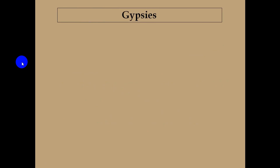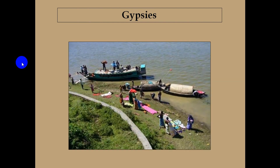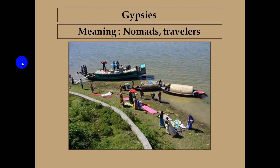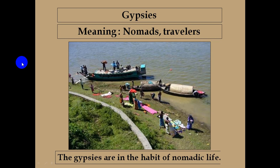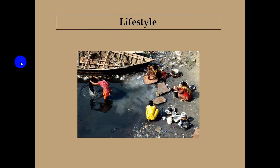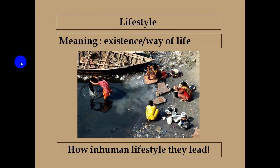Open your book and find out some unknown vocabulary and try to guess their meaning. You can also make sentences with them. Our first vocabulary is Jibshis, which means Nomads or Travelers. The Jibshis are in the habit of nomadic life. Our second vocabulary is Lifestyle, which means Existence or Way of Life. How inhuman a lifestyle they lived.